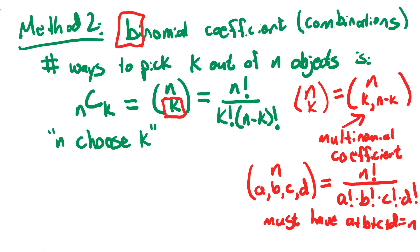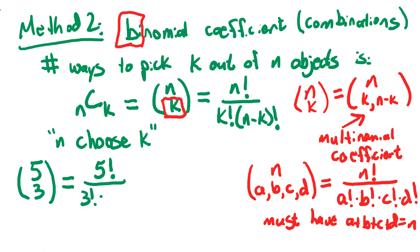The binomial coefficient — n choose k — is the number of ways to split n things into two groups. In our problem, we're picking one group; the second group is really the things not chosen. We had five questions, splitting them into one group of three we're going to answer and another group of two we're not going to answer — you partition all five into two separate groups.